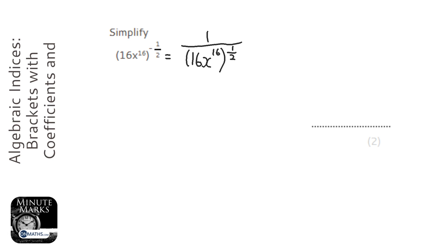Now we've got to figure out what a half means. Well, a half is a square root. So that 16 becomes 4 because we're square rooting everything inside the bracket. We're square rooting the 16 and we're square rooting the x to the power of 16.